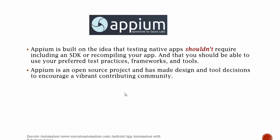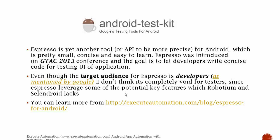The next tool we're going to discuss is Appium. Appium is built on the idea that testing native apps shouldn't require including an SDK or recompiling your application, and that you should be able to use your preferred test practices, frameworks, and tools. Appium is an open source project and has made design and tool decisions to encourage a vibrant contributing community, so you can even contribute to it or write libraries for Appium as well.